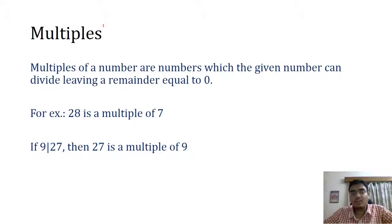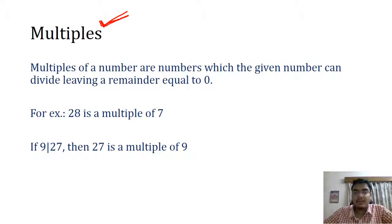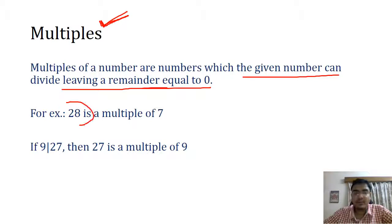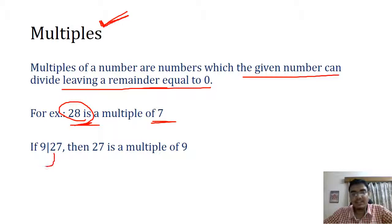What are multiples? Multiples are those numbers which occur in a number's multiplication table, or we can say: a multiple of a number is one which the given number can divide leaving a remainder equal to 0. For example, if we divide 28 by 7, remainder is 0, so 28 is a multiple of 7. Similarly, 27 is a multiple of 9.